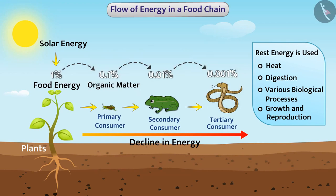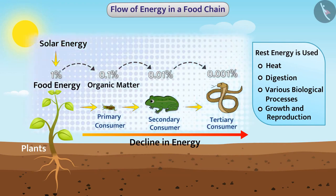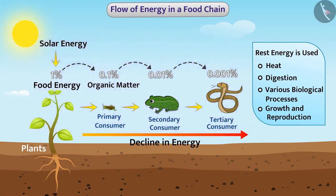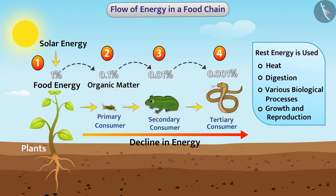Since very little energy is available for the next level, the food chain is generally limited to 3 or 4 levels. Remember that the flow of energy is in one direction — the energy can flow from the sun to the plants, from plants to the primary consumers, and from primary consumers to the next trophic levels, but cannot flow in the opposite direction.